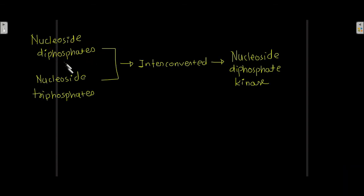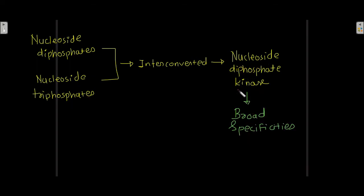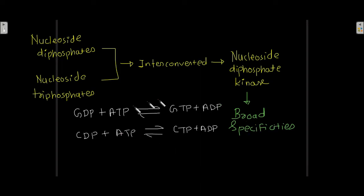Nucleoside diphosphates and nucleoside triphosphates are interconverted by nucleoside diphosphate kinase. This nucleoside diphosphate kinase converts nucleoside diphosphates into nucleoside triphosphates. Notably, this nucleoside diphosphate kinase has broad specificities as compared to monophosphate kinases — monophosphate kinases are quite specific, but nucleoside diphosphate kinase has broad specificities. These kinds of reactions are catalyzed by the nucleoside diphosphate kinase enzyme.